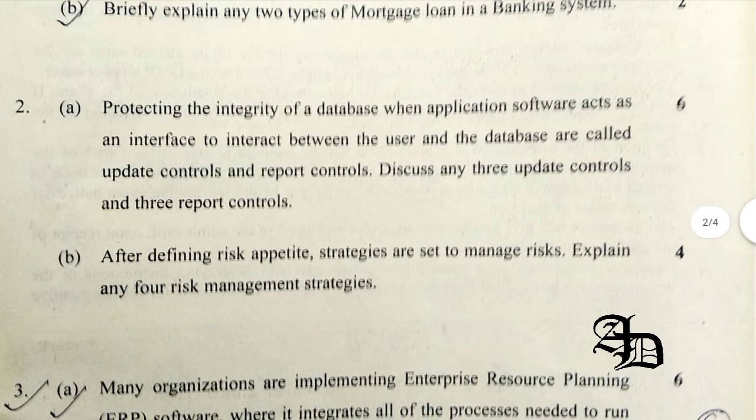Question 2A was related to discussing any 3 update controls and 3 report controls. Major update controls include: sequence check between transaction and master file, ensuring all records and files are processed, and processing multiple transactions for a single record in the correct order. For report controls, it can be standing data, print run-to-run control totals, and printing suspended account entries, which are usual general transactions in the banking sector.